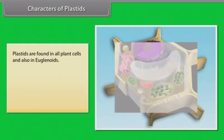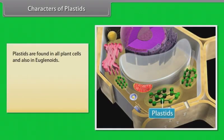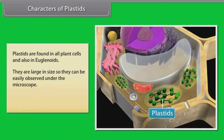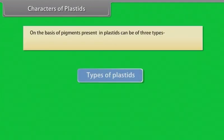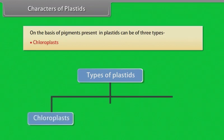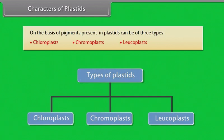Plastids are found in all plant cells and also in euglenoids. They are large in size so they can be easily observed under the microscope. They have specific pigments so they give color to plants. On the basis of pigments present in plastids, they can be of three types: chloroplasts, chromoplasts and leukoplasts.